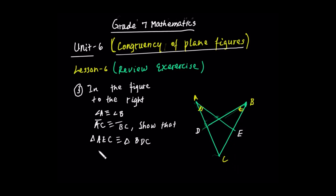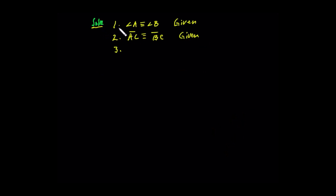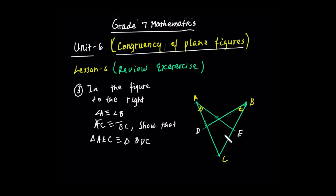Solution. Angle A is congruent to angle B — given information. Segment AC is congruent to segment BC — also given information. Now let's see the figure. Angle A is congruent to angle B, given. Segment AC is congruent to segment BC, given.